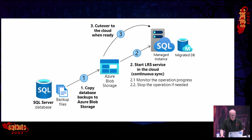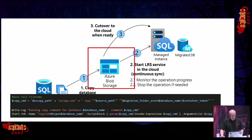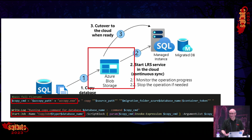When the differential restore is completed, we can then start taking our log backups using the BACKUP LOG query with checksum and compression options, run as a PowerShell job. We're now in log shipping mode. Once we copy the log backup up to the storage account, LRS picks it up and restores it, then waits in that state for up to 30 days, or until we manually bring the database online or stop the LRS process.